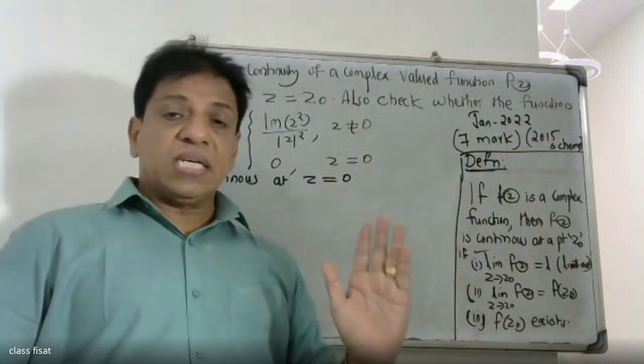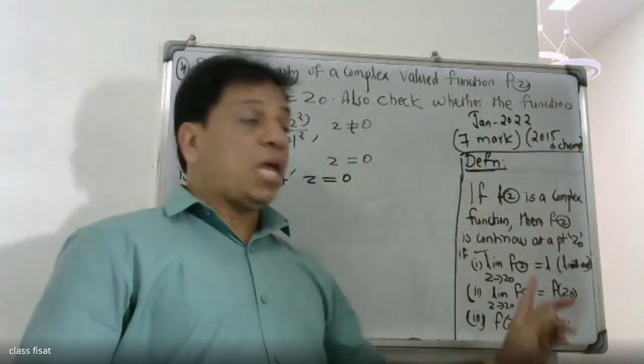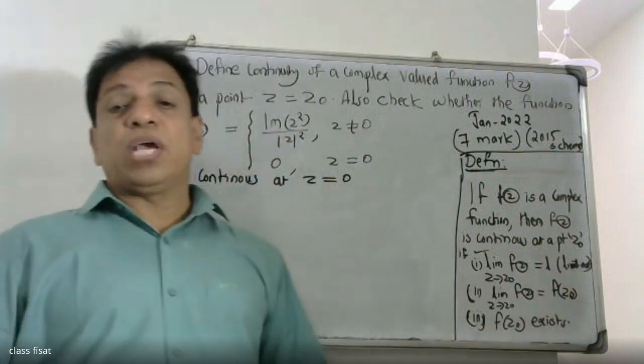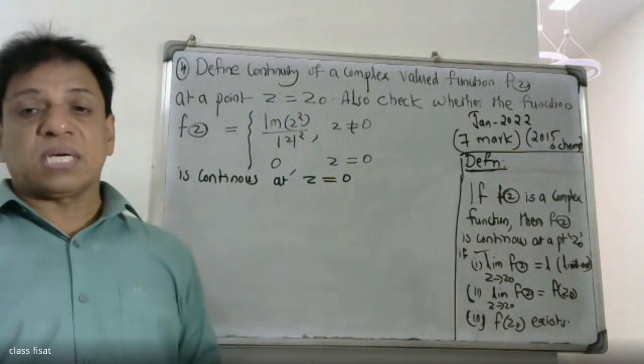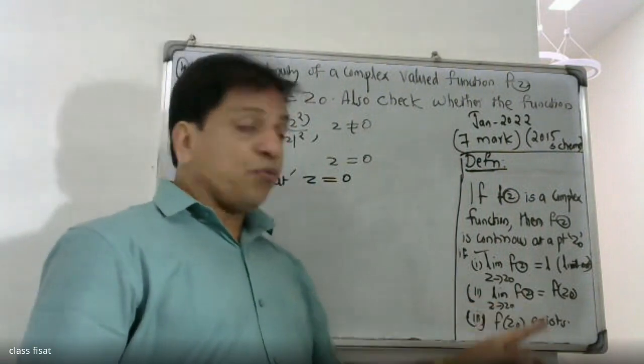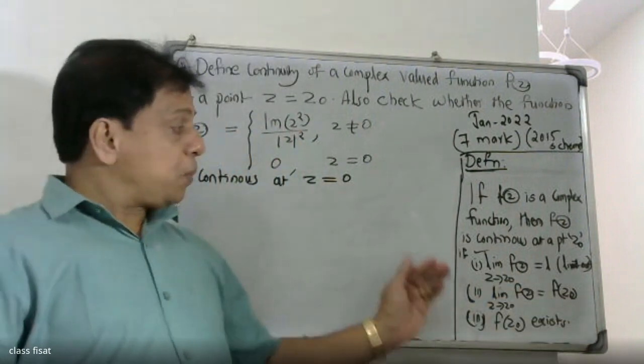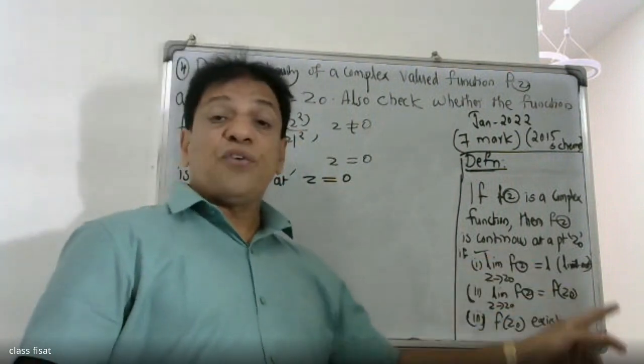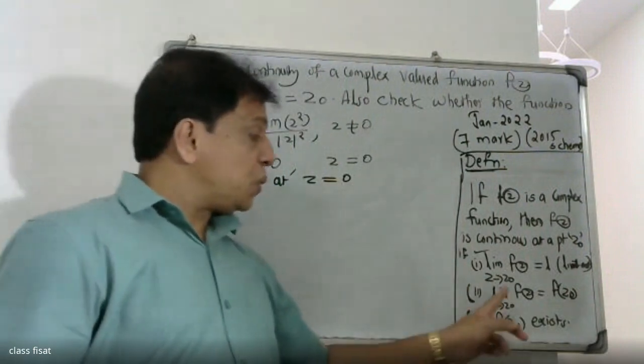Here f of z approaches the value L. That is, the limit exists and equals L. The second condition: f of z₀ exists. If these three conditions are fulfilled, the complex function is continuous at point z₀.